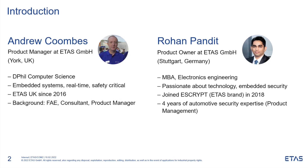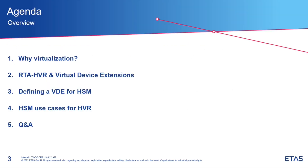Let's get started with the webinar today. On today's presentation, we have the following agenda. We first start with the question about why virtualization — what is the relevance of virtualization in the next generation of EE architecture? Then we move on to some basics about the RTA hypervisor and the virtual device extensions. Andrew will give an overview about this. Then we understand how we can define a VDE for an HSM. Then we look at some use cases which are relevant for the HSM using a hypervisor-based system. And finally, we end with a Q&A session.